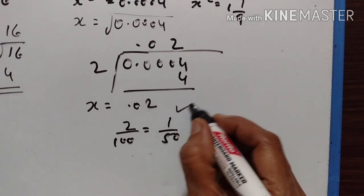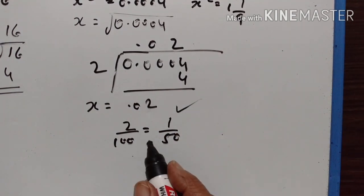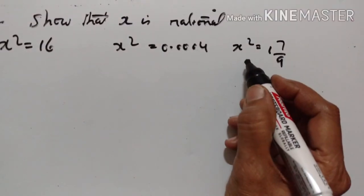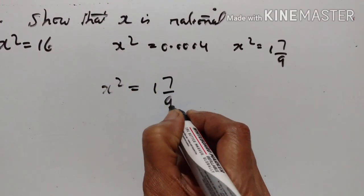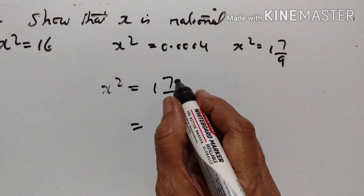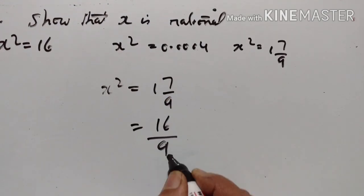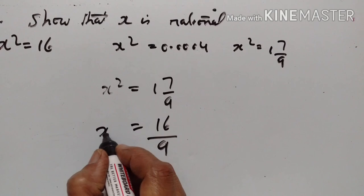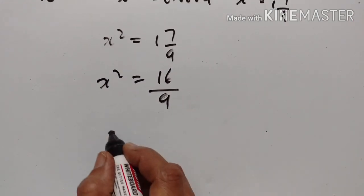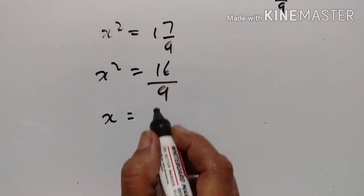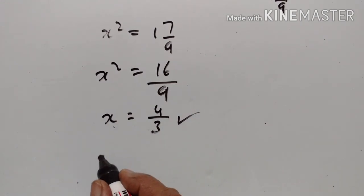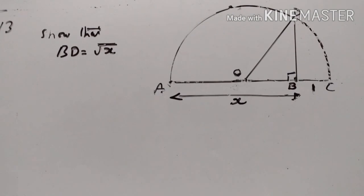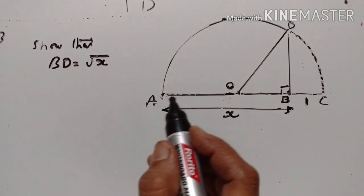Now show that x is rational if x squared equals 1 and 7 upon 9. That is 9 plus 7 equals 16 upon 9. So x squared equals 16 upon 9. Taking the square root on both sides we get x equals 4 upon 3, which is a rational number.